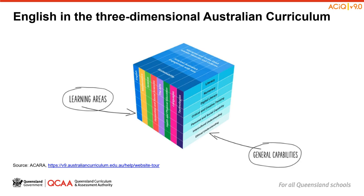The general capabilities have been refined, with changes to elements, sub-elements and Continua. And finally, there are the three cross-curriculum priorities: Aboriginal and Torres Strait Islander Histories and Cultures, Asia and Australia's Engagement with Asia, and Sustainability.